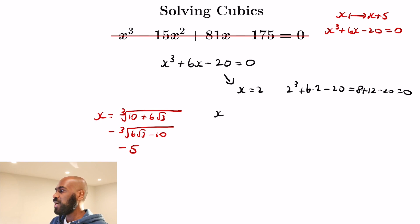So that means that 2 has to be a root of this cubic equation, which actually means that x minus 2 is a factor of the left hand side. And then you can find out the other factor, knowing that it has to be a quadratic.